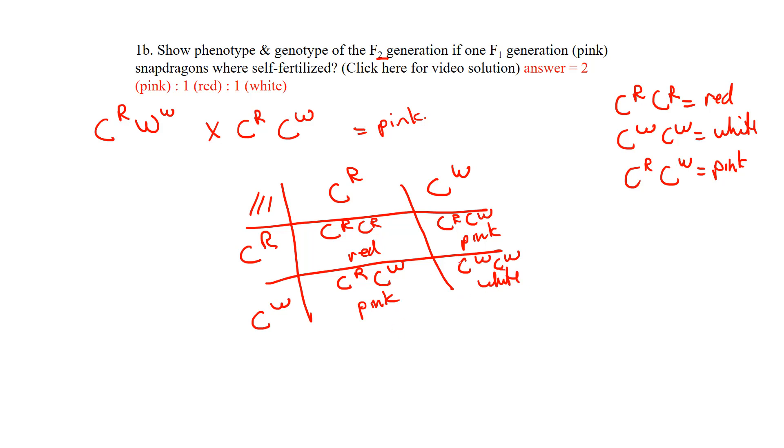For the ratio, I start with the highest number first: two pink, one red, and one white. The order of red and white is arbitrary. If you have any questions on incomplete dominance, just email me and we can talk it through. Thanks!